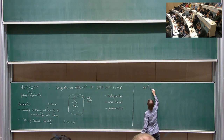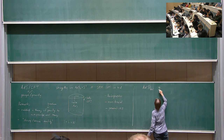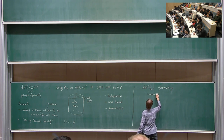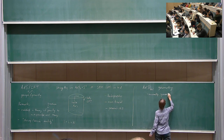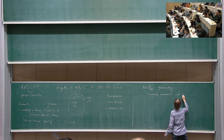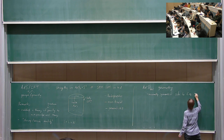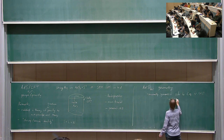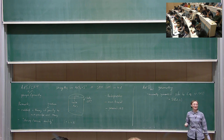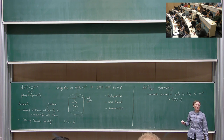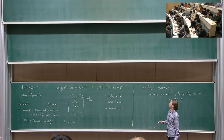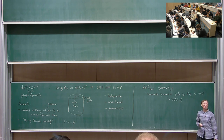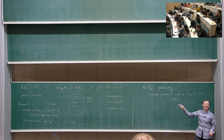Let me work in arbitrary D+1 dimensions — D spatial and one time dimension. AdS can be thought of as the maximally symmetric solution to Einstein's equations with a negative cosmological constant and no matter — just the vacuum solution. The symmetry group is SO(D,2). To manifest all these symmetries, you write it as an embedding of a hyperboloid in a flat spacetime with two time directions. Depending on which embedding you choose, you get different line elements that manifest different symmetries.